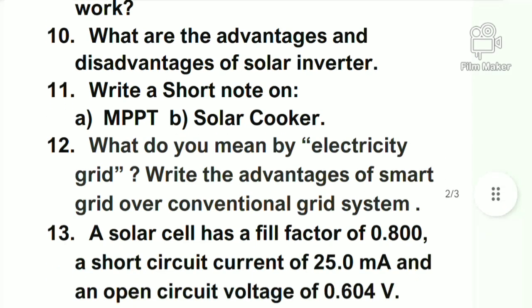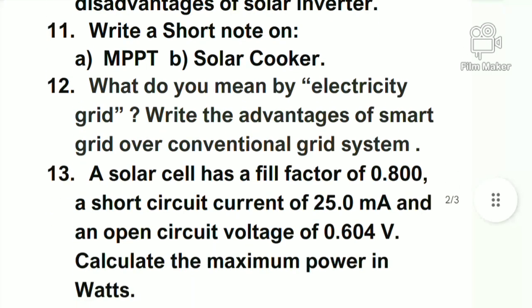Question eleven: what do you mean by electricity grid? Write the advantages of a smart grid over a conventional grid system. We have to cover the advantages of the smart grid and compare it with the conventional grid system. Question twelve: a solar cell has a fill factor of 0.800, a short circuit current of 5.0 mA, and an open circuit voltage of 0.604 V — calculate the maximum power in watts.